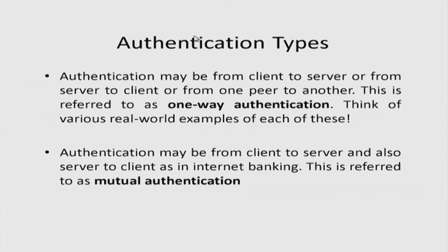There are different kinds of authentication protocols. We will concentrate here on cryptographic authentication. One is one-way authentication — A tries to prove to B that A is indeed A, but B does not have to prove to A. Another paradigm is mutual authentication, where A proves to B that it is A and B proves to A that it is B.